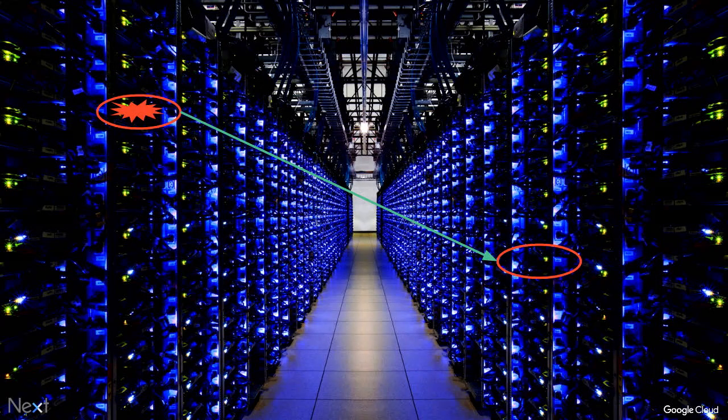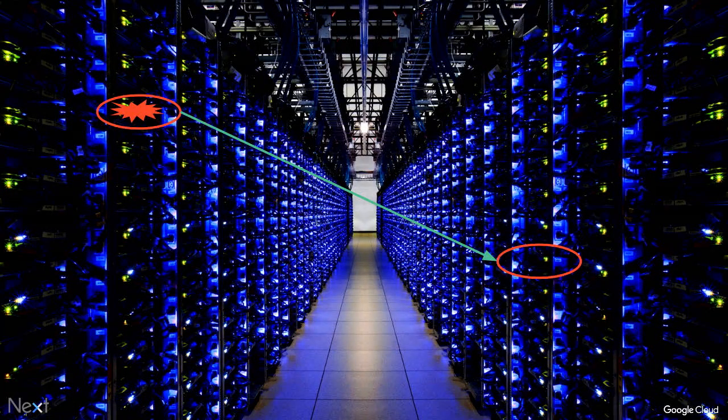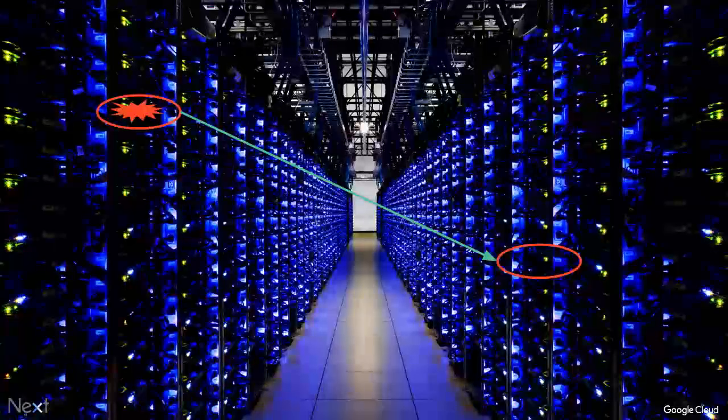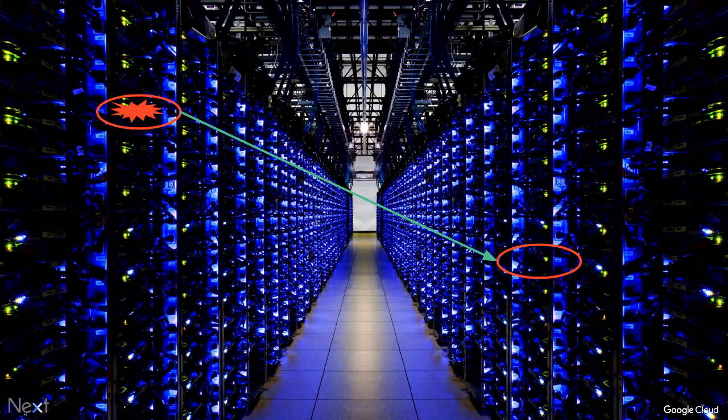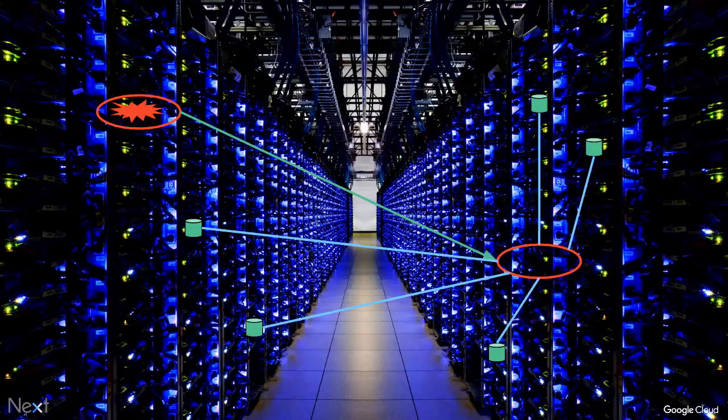If something bad happens and a physical machine fails unexpectedly, we start your instance on another physical machine automatically — unless you've told us not to. You might be asking: what about the stuff on my hard drives? If you're storing data in persistent disks, that data is already stored in a distributed fashion throughout the cluster, which means we can still mount your drives even when running on a different physical machine.